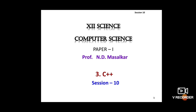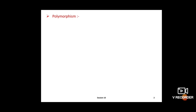Hello students, welcome to another session of Class 12 Computer Science Paper 1. Let us proceed to Chapter 3 on C++. In this session I am explaining polymorphism and types of polymorphism.